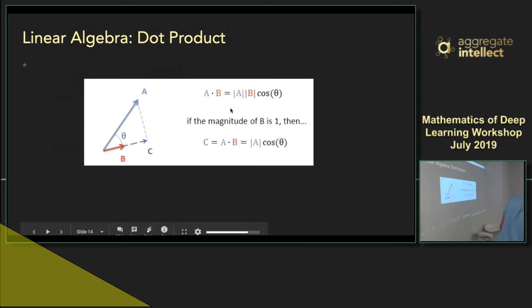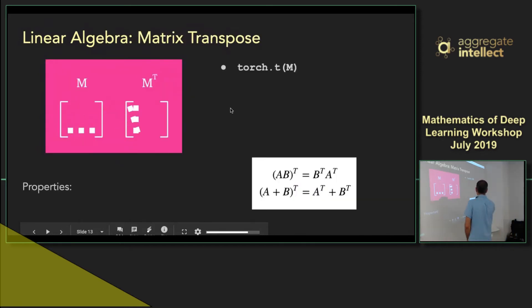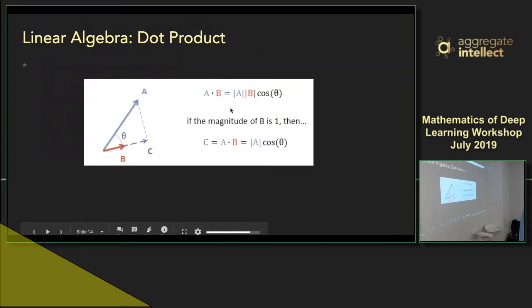You can actually, I didn't put this in the Colab notebook but if you like you can numerically test this. So take two, create two matrices in PyTorch and compute the left side and compute the right side and test to see if they are the same.